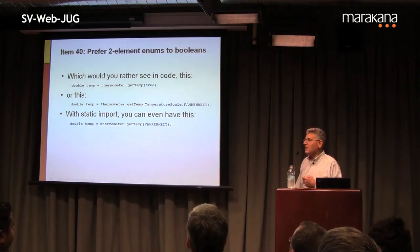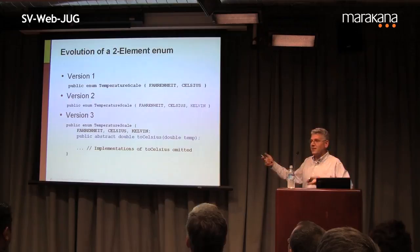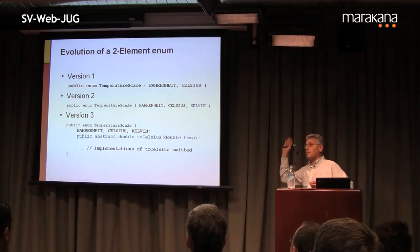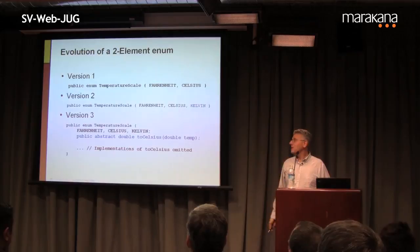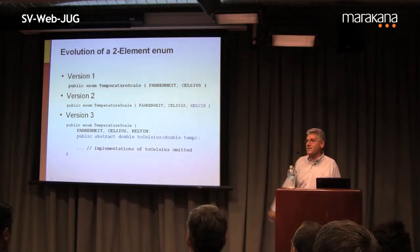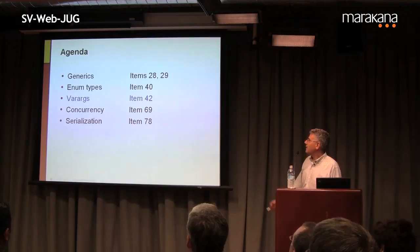Suppose you start with a temperature scale of FAHRENHEIT and CELSIUS, and then a science nerd wants KELVIN. No problem — just add a third enum value. If you'd used a boolean, you're stuck; there is no third value. And then suppose you want to convert all scales to a common temperature: just add a method to the enum called toCelsius that converts any temperature value of the scale to Celsius. That's why you should almost always use two-element enums rather than true or false.